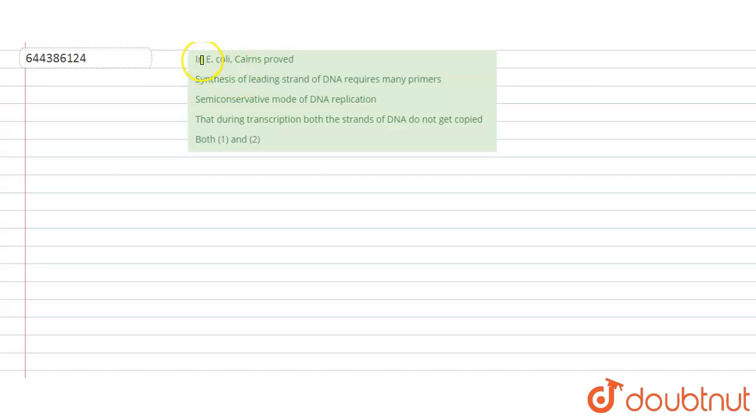Question is: In E. coli, Cairns proved - options are: synthesis of leading strands of DNA requires many primers, semi-conservative mode of DNA replication, that during transcription both the strands of DNA do not get copied, both 1 and 2.